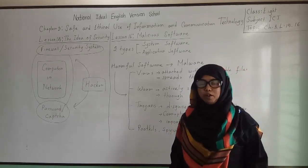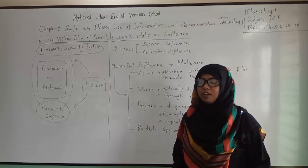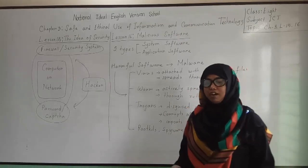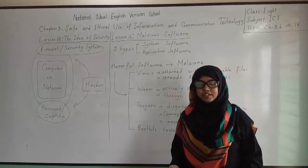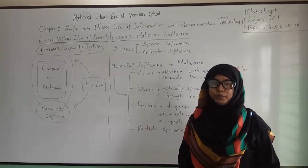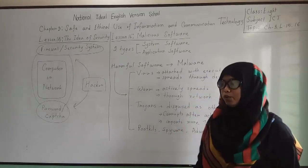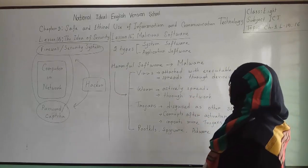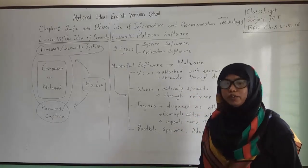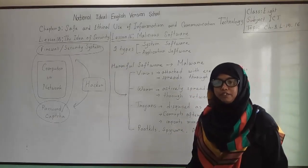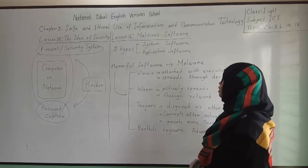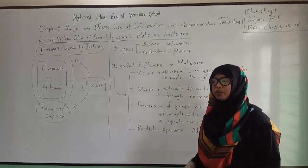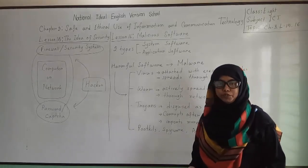Application software consists of applications that we use to do different activities on our computer, such as word processors and web browsers. Word processors are applications like Microsoft Word, Notepad, or OpenOffice Writer. Web browsers include Google Chrome or Mozilla Firefox. There are also other kinds of application software which we use to listen to songs or watch movies, etc.